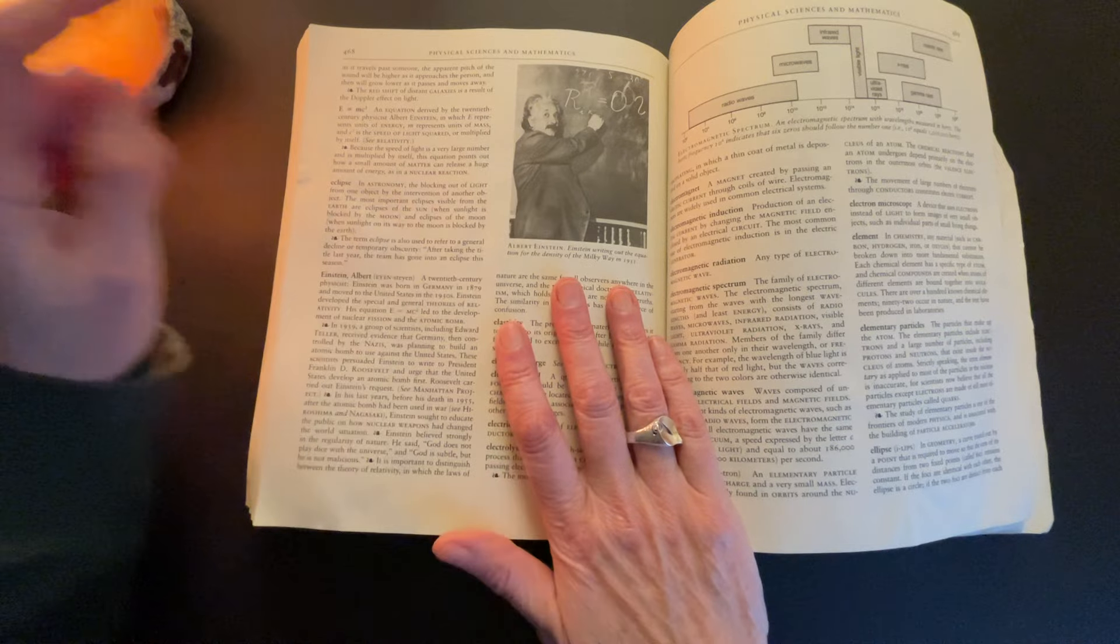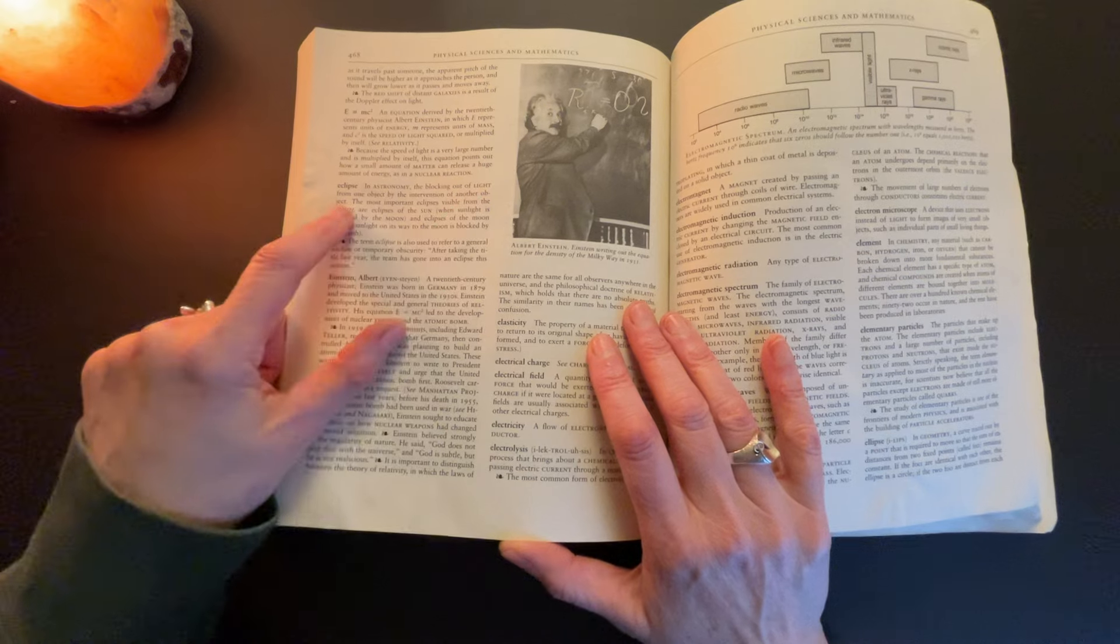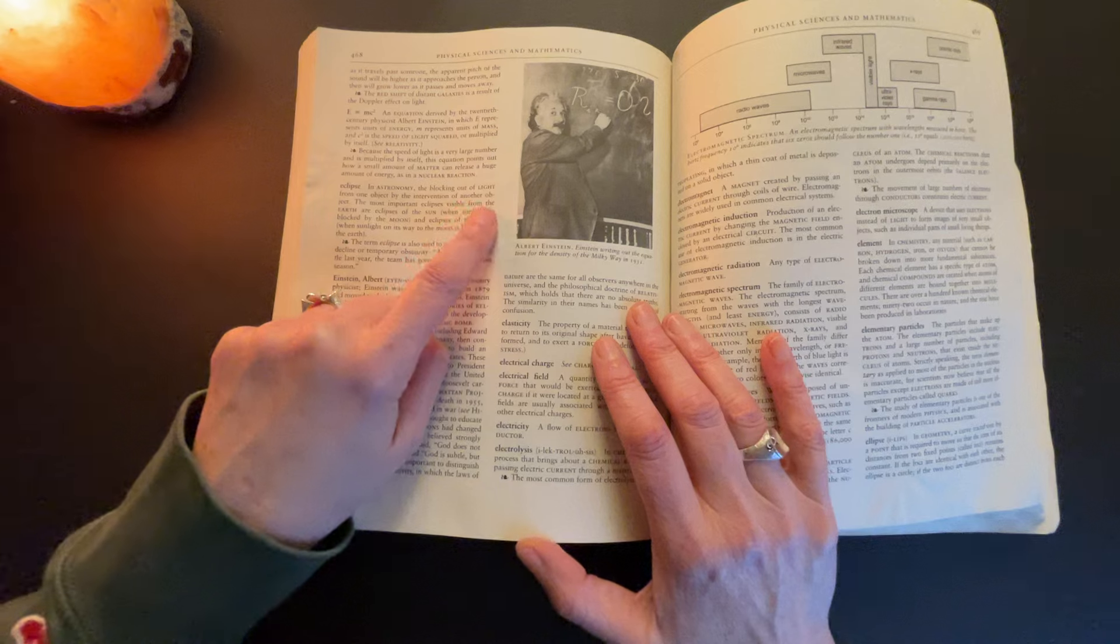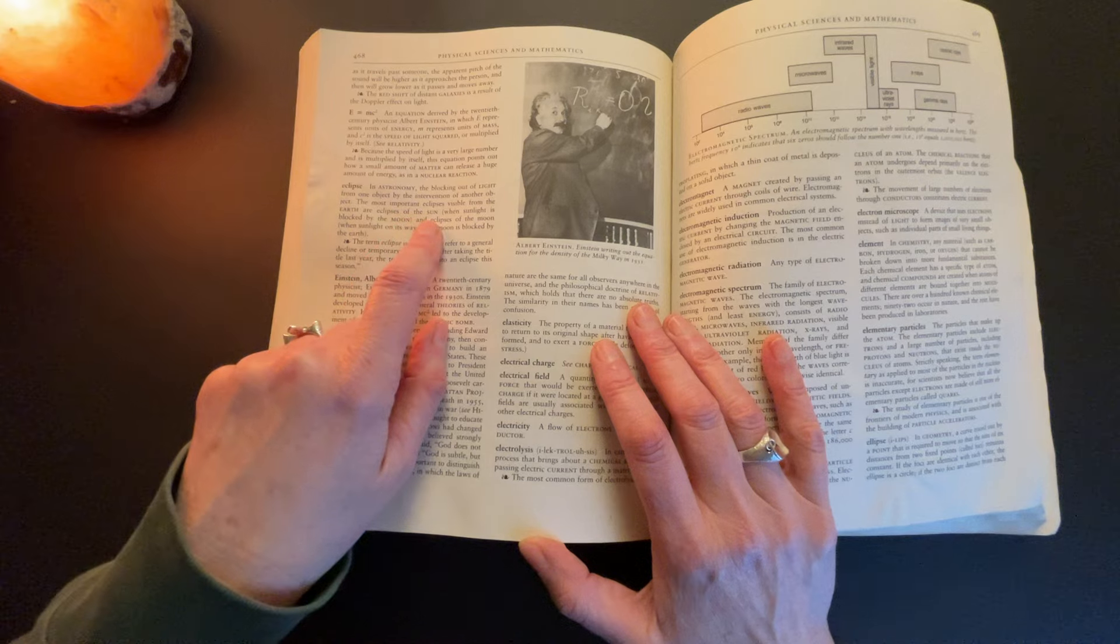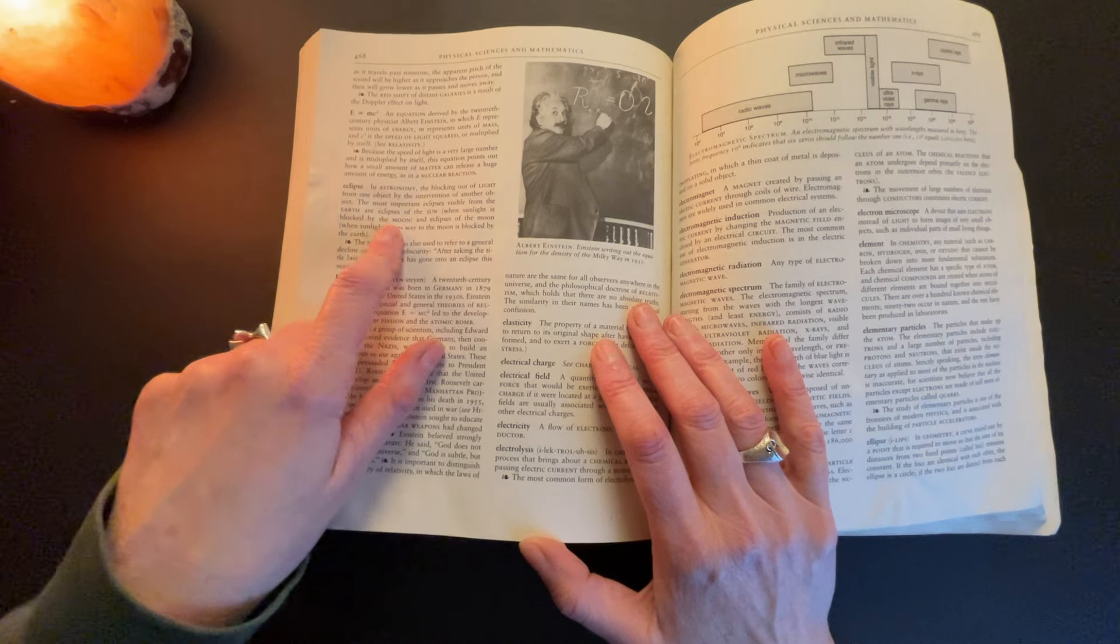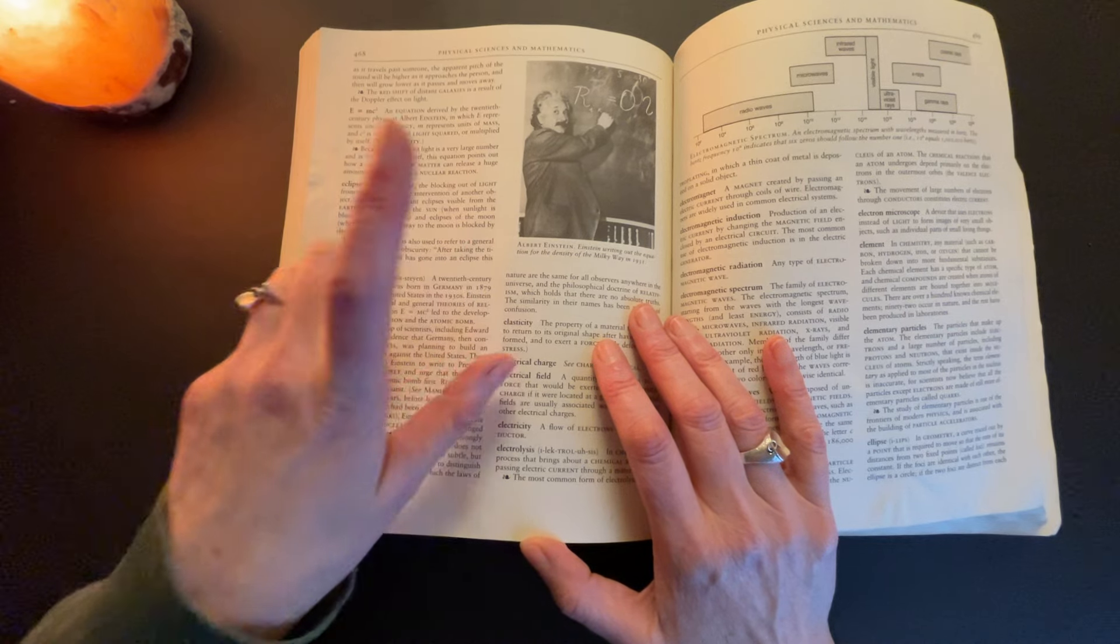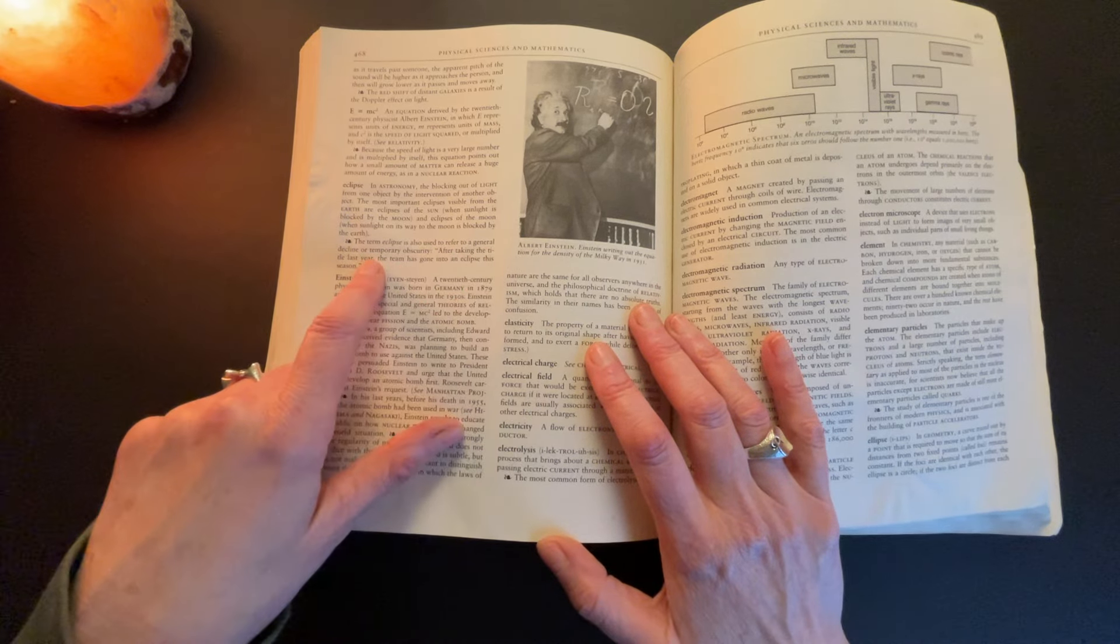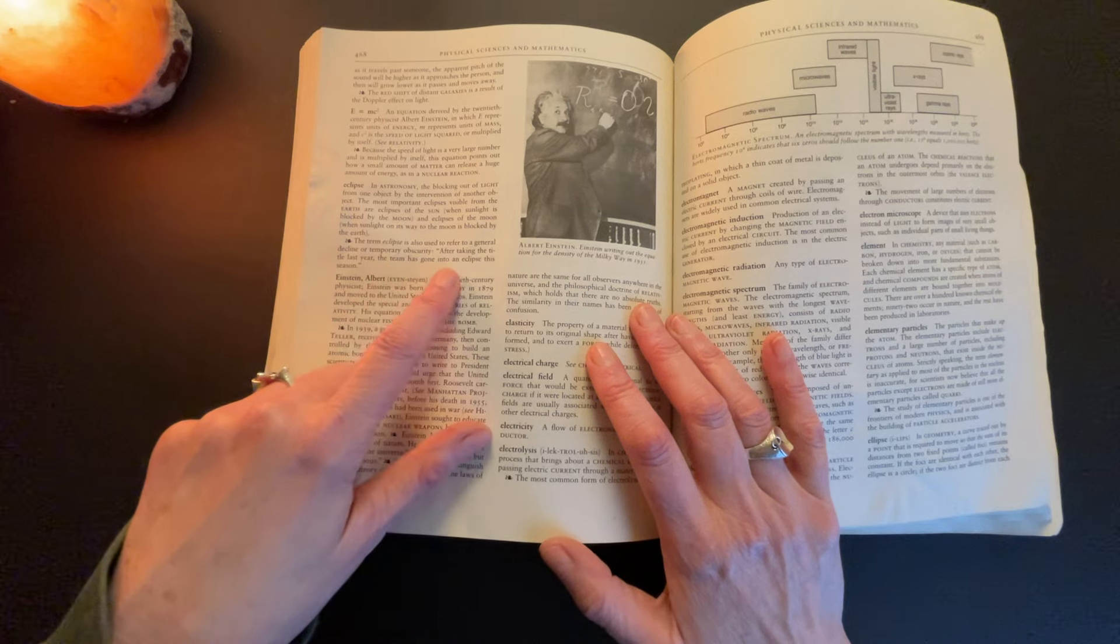Eclipse: In astronomy, the blocking out of light from one object by the intervention of another object. The most important eclipses visible from Earth are eclipses of the sun when sunlight is blocked by the moon, or eclipses of the moon when sunlight on its way to the moon is blocked by the Earth.